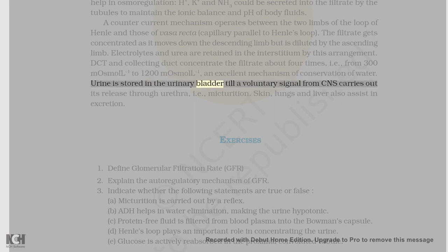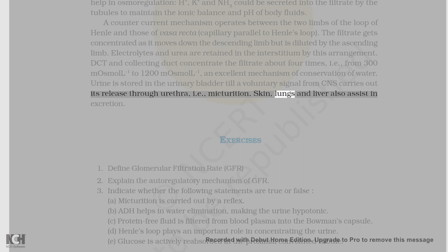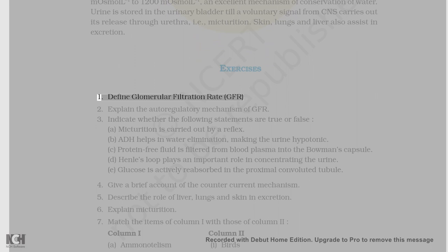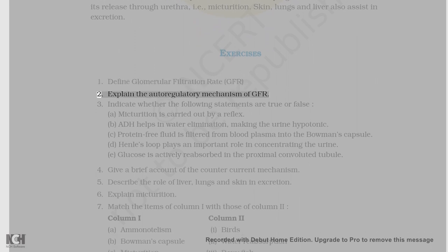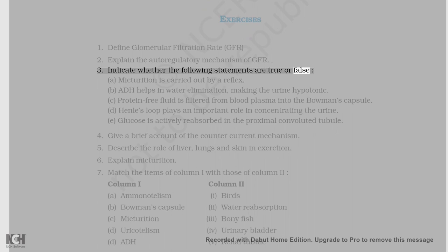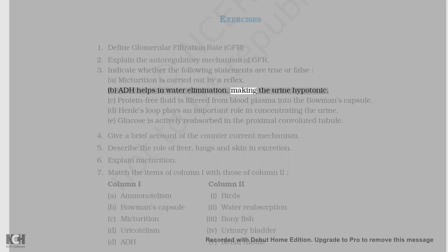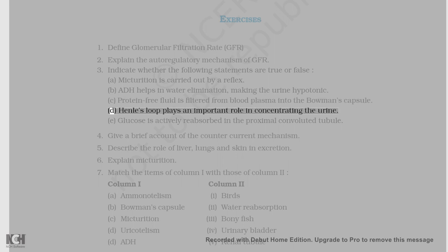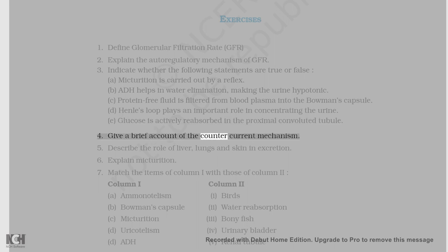Urine is stored in the urinary bladder till a voluntary signal from CNS carries out its release through the urethra, i.e., micturition. Skin, lungs, and liver also assist in excretion. Exercises: 1. Define glomerular filtration rate, GFR. 2. Explain the autoregulatory mechanism of GFR. 3. Indicate whether the following statements are true or false: a. Micturition is carried out by a reflex. b. ADH helps in water elimination, making the urine hypotonic. c. Protein-free fluid is filtered from blood plasma into the Bowman's capsule. d. Henle's loop plays an important role in concentrating the urine. e. Glucose is actively reabsorbed in the proximal convoluted tubule. 4. Give a brief account of the counter-current mechanism. 5. Describe the role of liver, lungs, and skin in excretion.